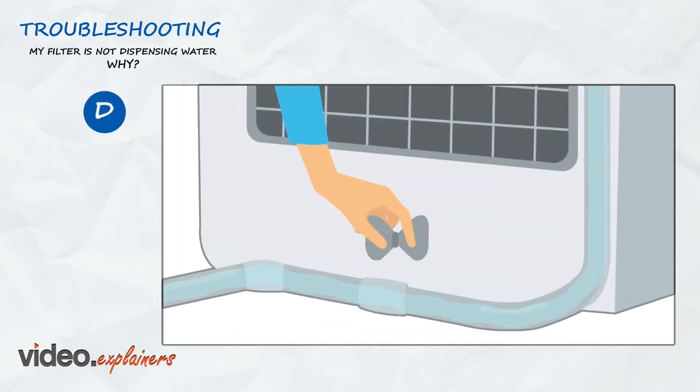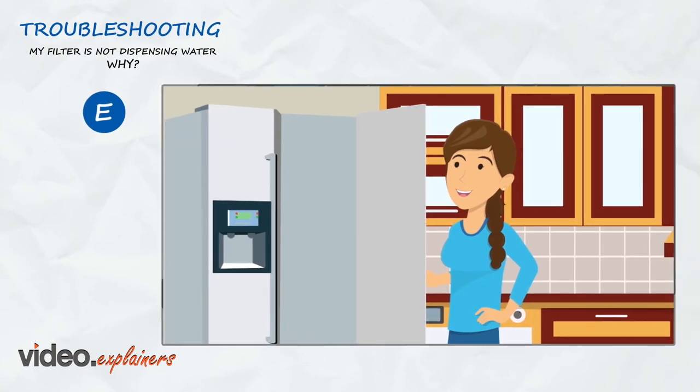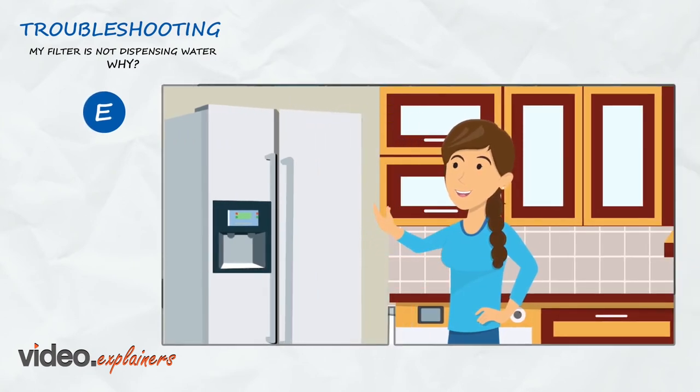Make sure the refrigerator's water line is turned on. The saddle valve connects the water supply line to the house plumbing. It must be fully open for the refrigerator to receive any water. And finally, remember the dispenser in the door will not operate unless the door is closed.